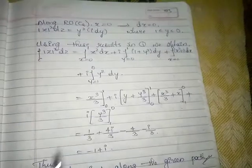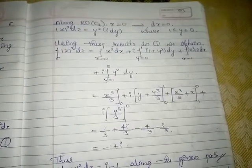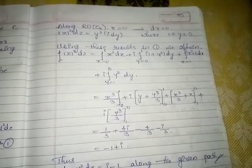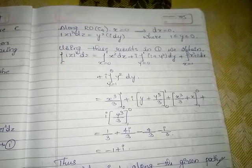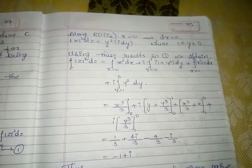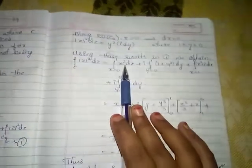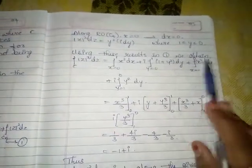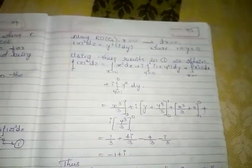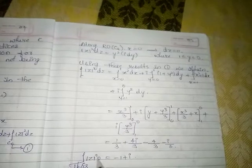Applying all these conditions, the integration over C of |z|² dz equals: integral from 0 to 1 of x² dx, plus i times integral from 0 to 1 of (1 + y²) dy, plus integral from 1 to 0 of (x² + 1) dx, plus i times integral from 1 to 0 of y² dy. Evaluating: x³/3, then y + y³/3, then -(x³/3 + x), then y³/3 with respective limits.